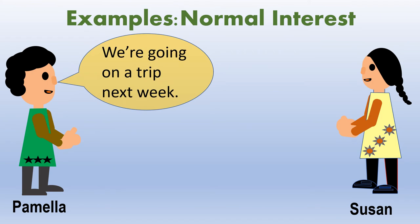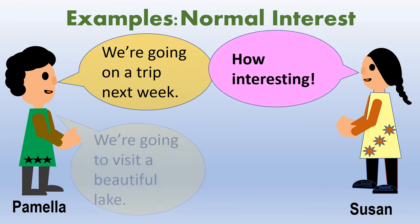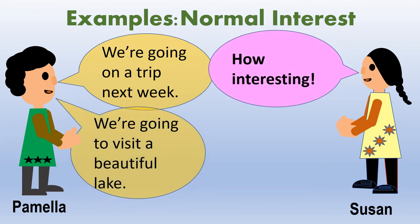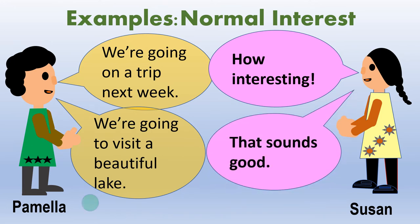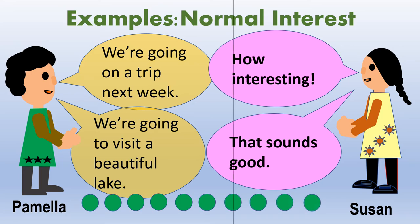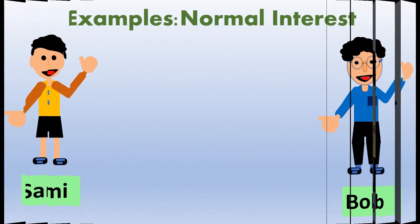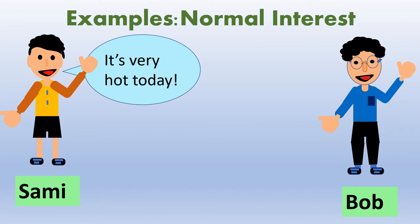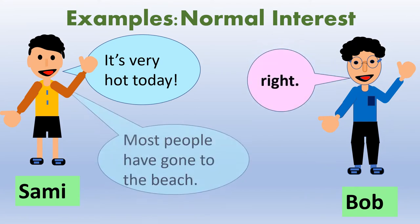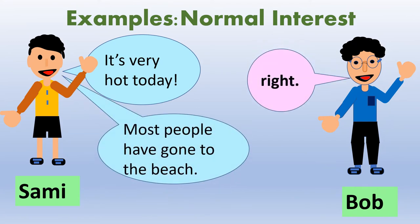A: We're going on a trip next week. B: How interesting! A: We're going to visit a beautiful lake. B: That sounds good. A: It's very hot today. B: Right. A: Most people have gone to the beach. B: Oh, I see.